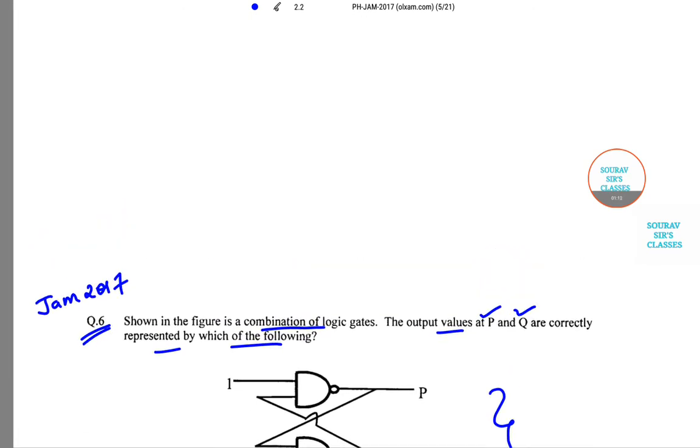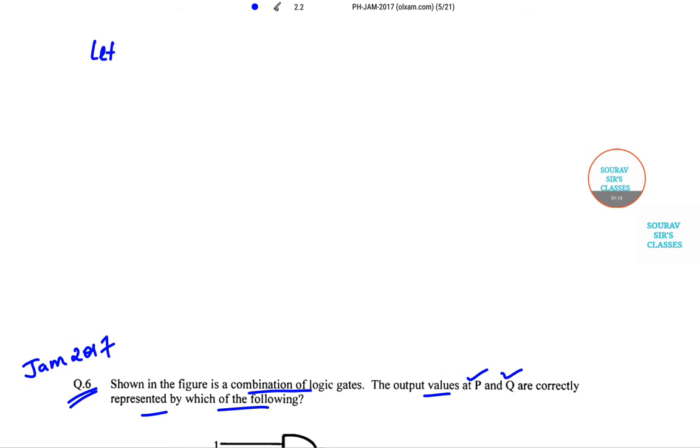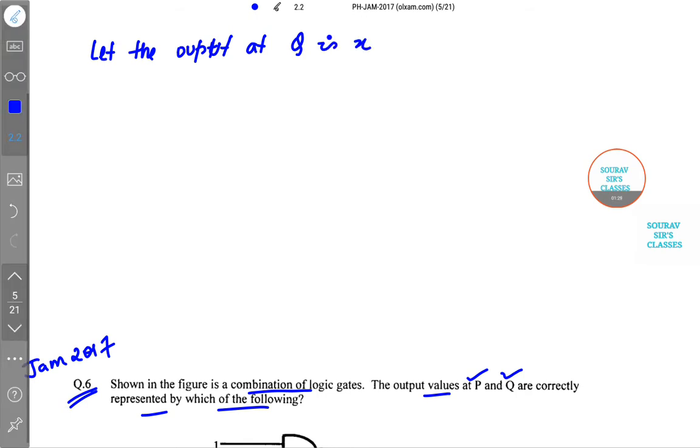So we have, let the output at Q is x. Let me reduce the pen size a little. So we have x is equal to Q.